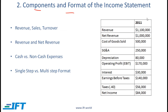Components and format of the income statement. The top line is the revenue line. Other names for revenue include sales and turnover. Next, we see net revenue or net sales. In certain situations, a company might sell but there can be returns — once we subtract the returns, we have a net revenue number. Certain companies might sell through agents who charge commissions; when we subtract the commission, we are also left with net revenue or net sales.